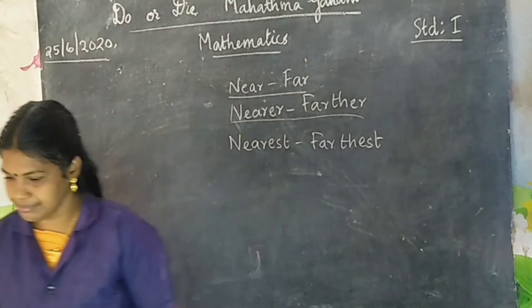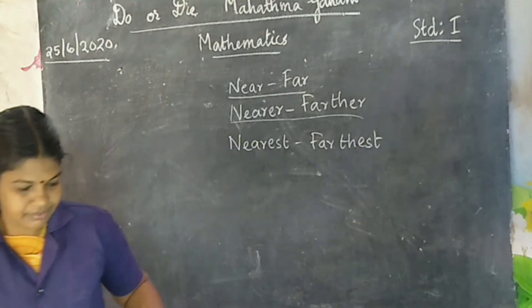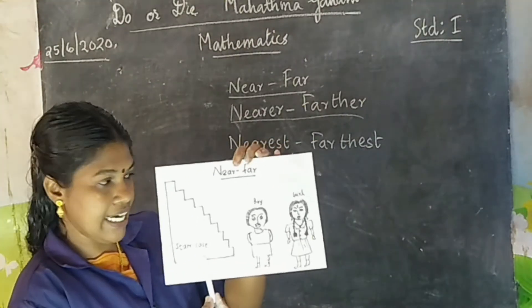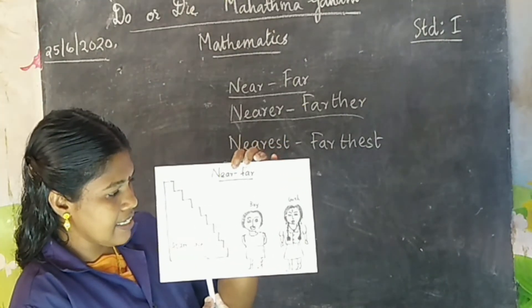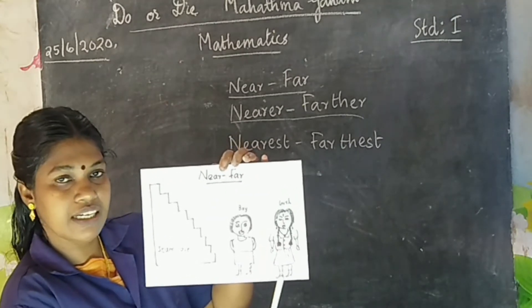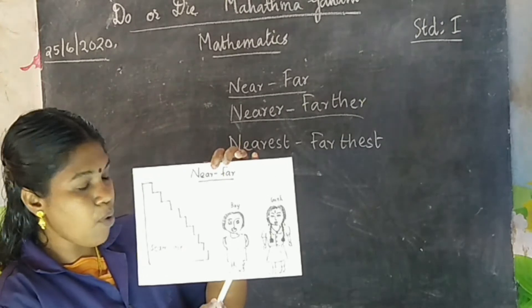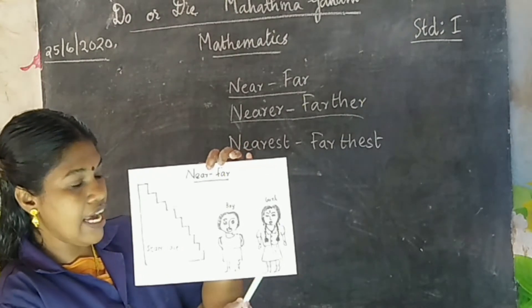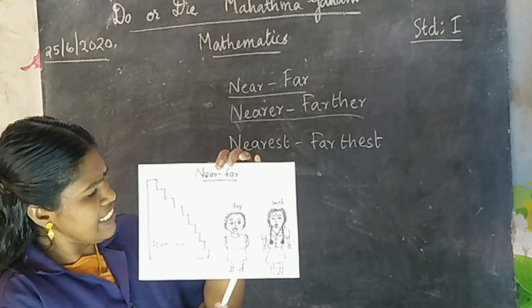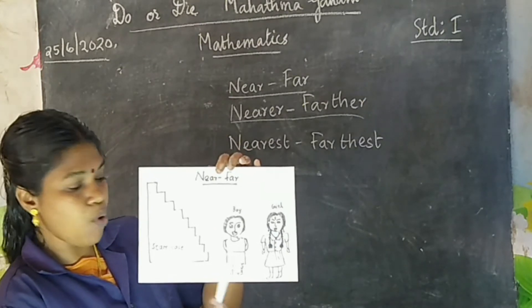Let's take another example. Here a staircase, a boy, and a girl. A staircase, a boy, and a girl. Who is near this staircase?